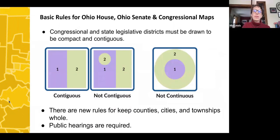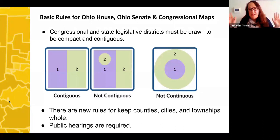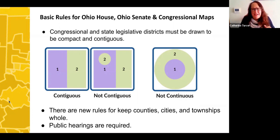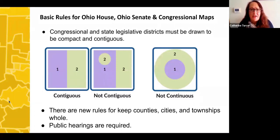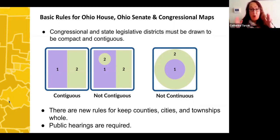Here are some basic rules that apply to both Ohio House, Ohio Senate, and Congress. Congressional and state legislative districts must be compact — you won't have a district stretching from Toledo to Cleveland — and they need to be contiguous. There's also a focus on keeping political subdivisions together — counties, cities, and townships — as a good proxy for keeping communities together. Importantly, public hearings are required for both mapmaking processes, and this is where we can all step in and promote what we want when it comes to mapmaking.